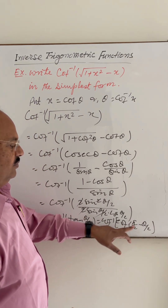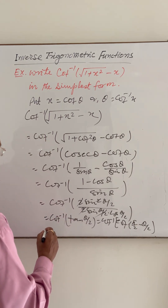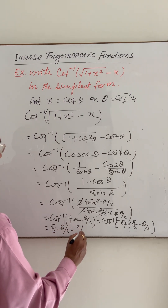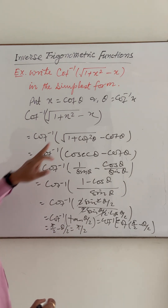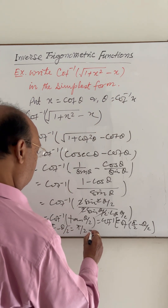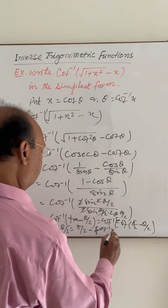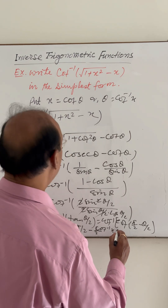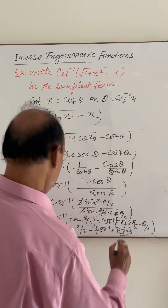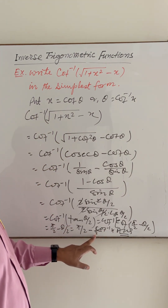Using the identity cot inverse of cot x equals x, we get pi by 2 minus theta by 2. Since theta equals cot inverse x, this becomes pi by 2 minus one half of cot inverse x. So the simplest form is pi by 2 minus (cot inverse x) by 2. This is the answer.